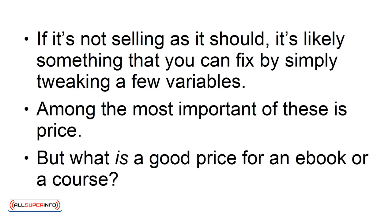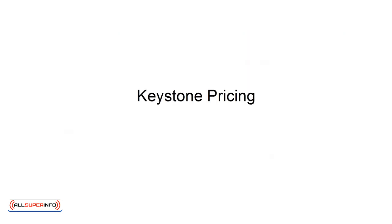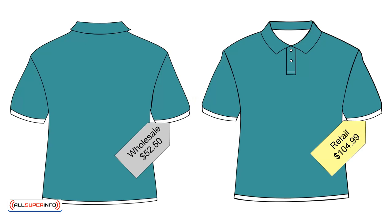But what is a good price for an e-book or a course? Were you selling a physical product as a reseller, then you might use a pricing strategy called keystone pricing. This means that you charge twice the amount you pay for it when buying it from wholesalers. While this is fairly standard, it only works if each individual unit has a cost associated with it.